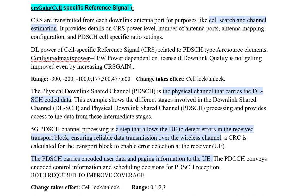After a parameter change, the effect is checked by performing a cell lock and unlock. After unlock, the parameter changes take effect. Some parameters require a cell-wise lock and unlock. After unlock, the parameter value changes — for example, to 300. The PDSCH value is 300, so after a positive parameter change, cell lock and unlock are required.